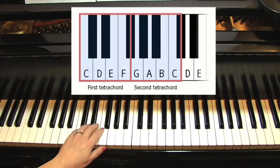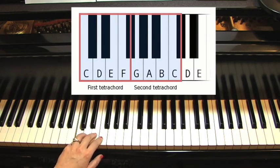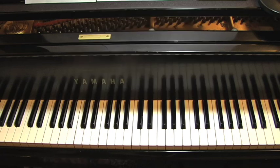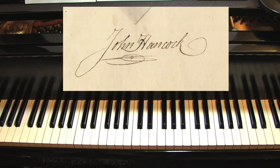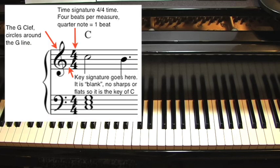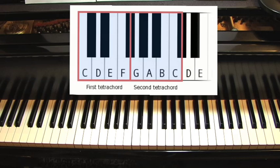This leads us to the term key signature. Just like each of us has a signature which represents us to a bank on a check or signing a letter, the key signature is what identifies a particular key. You find it written after the clef signs. The key of C major turns out to be no sharps and no flats. There are 15 major scales, and we'll begin with the C major scale now.